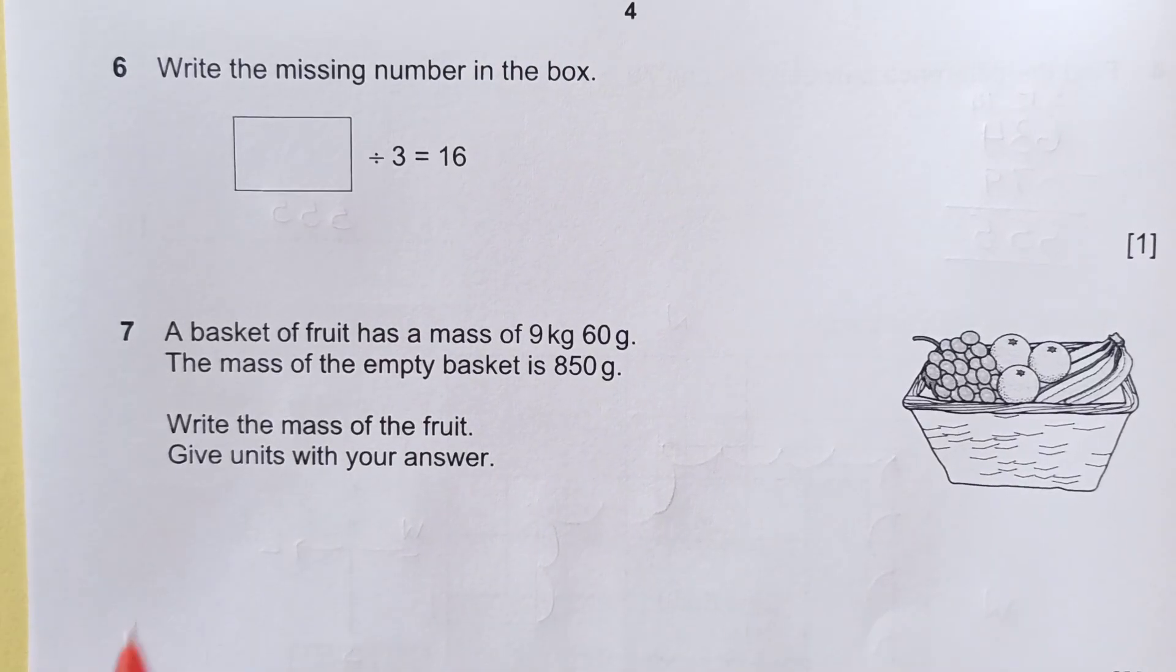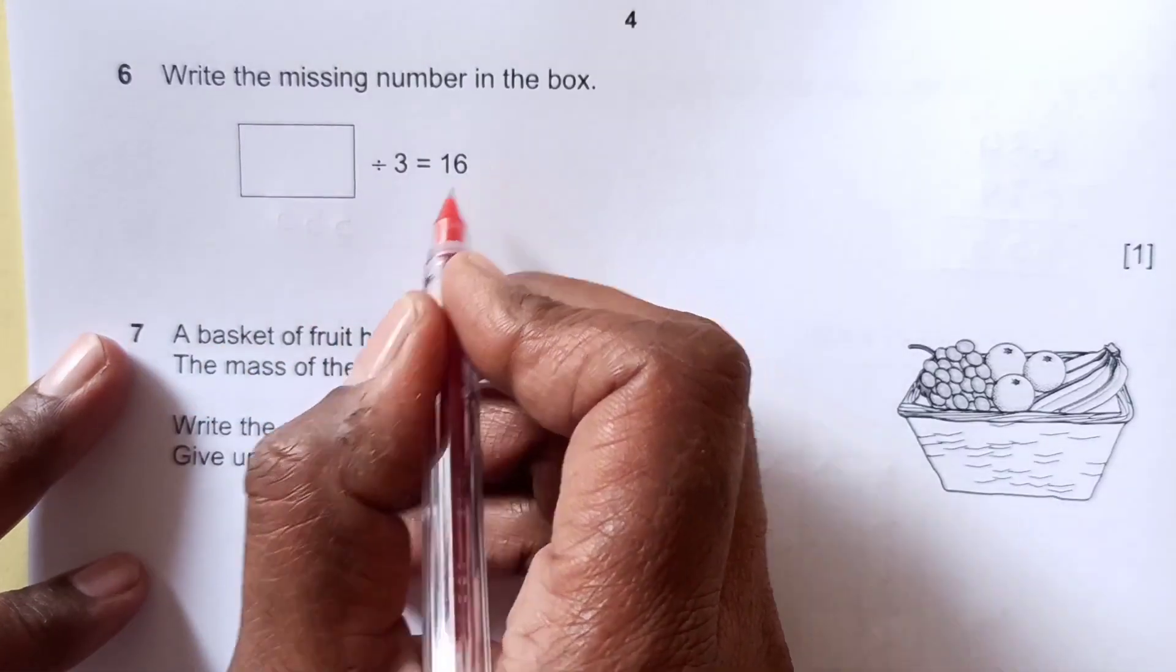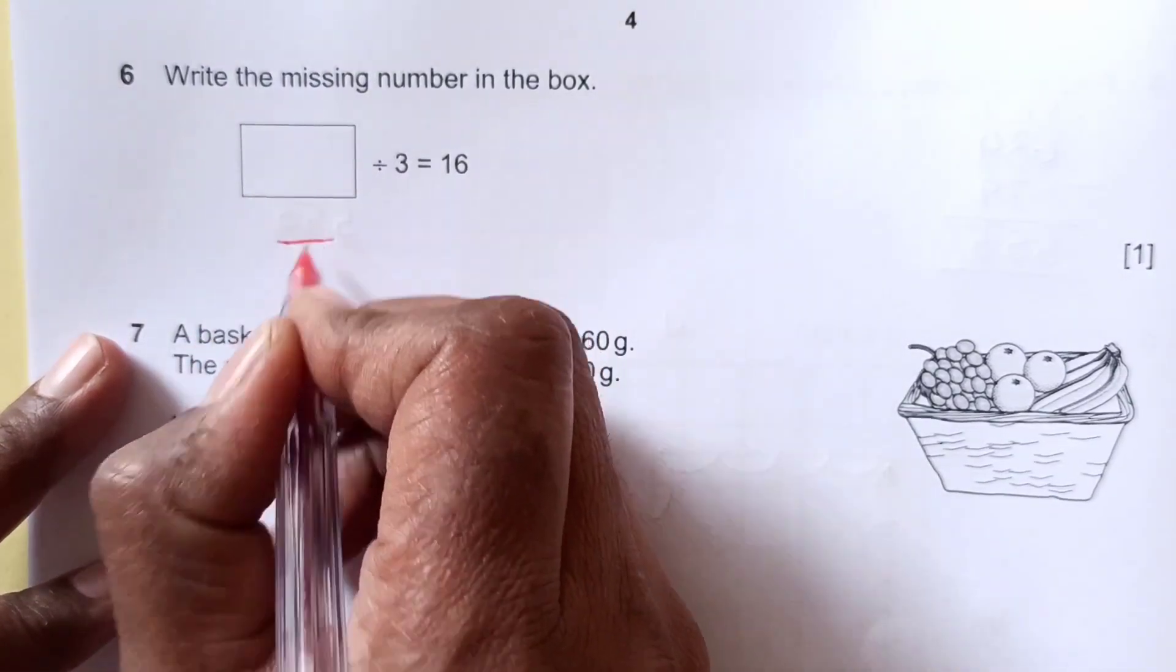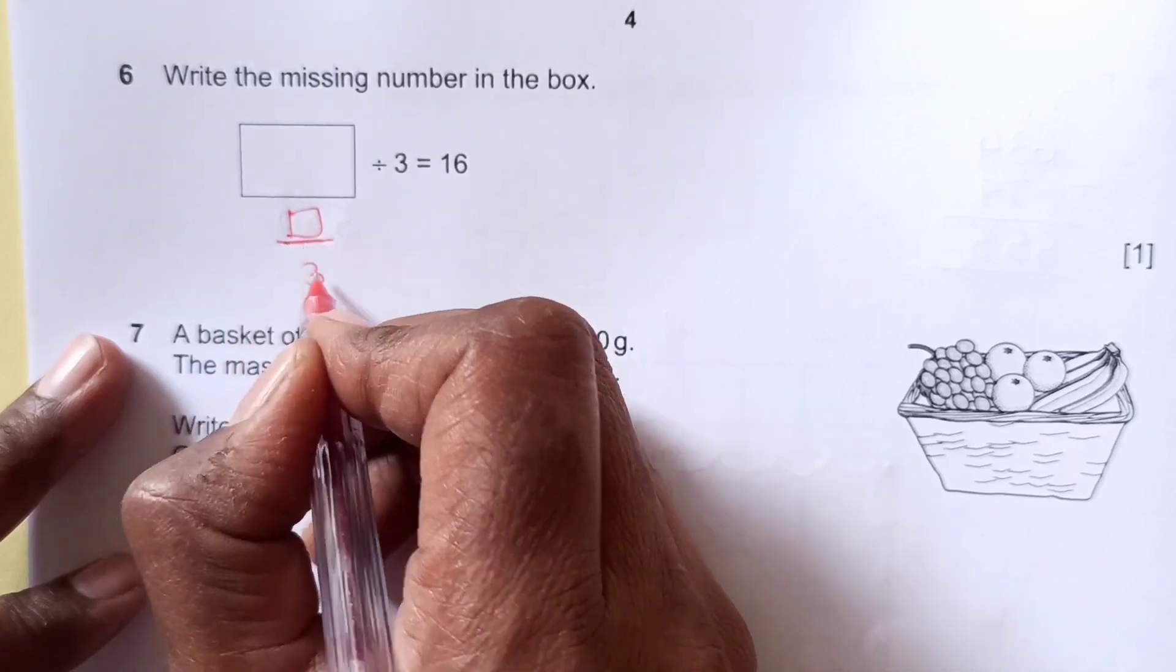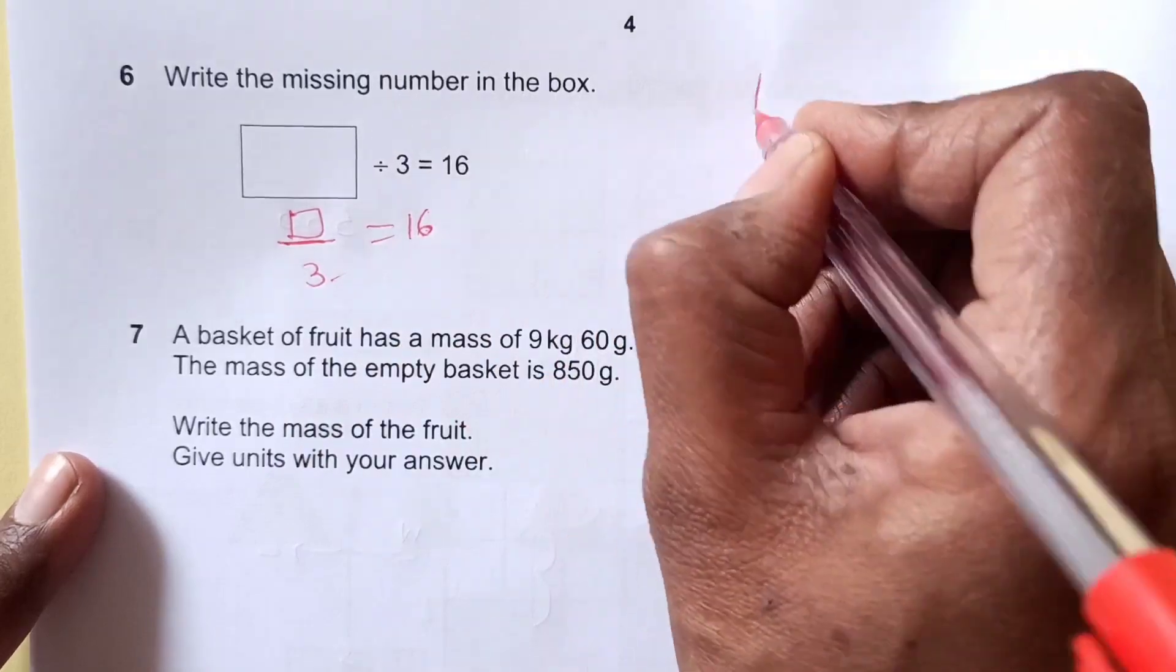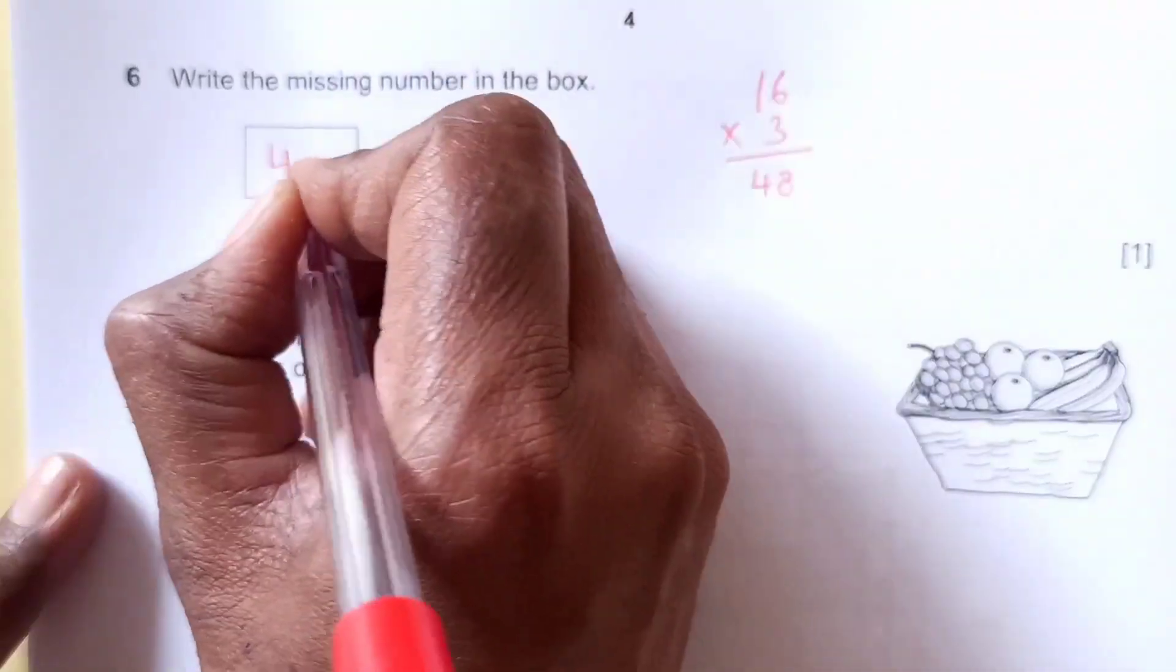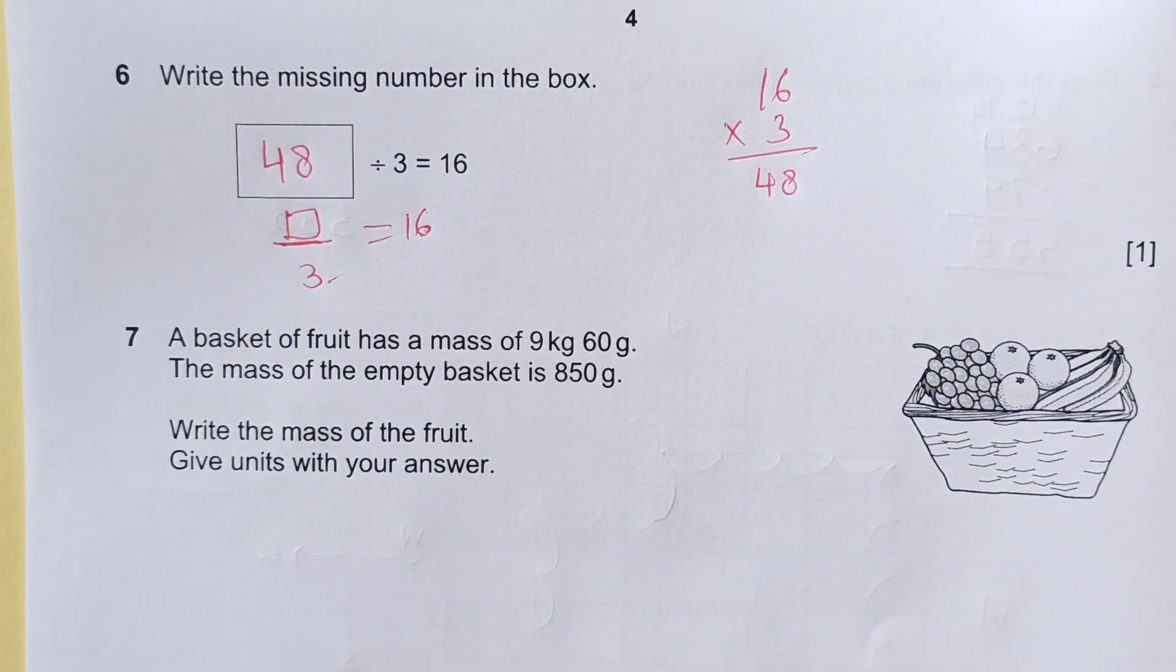Number 6. Write the missing number in the box. Something divided by 3 is 16. We can cross multiply here: 16 times 3, which is 48. So 48 divided by 3 gives you 16.